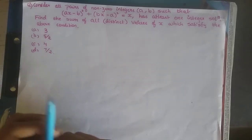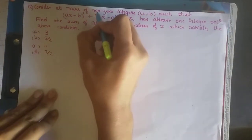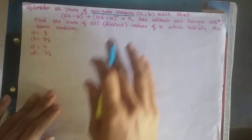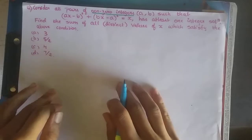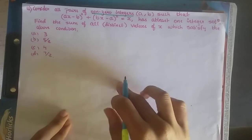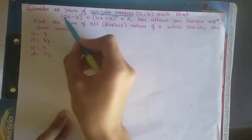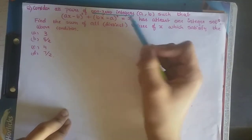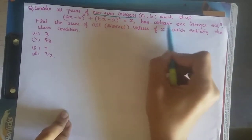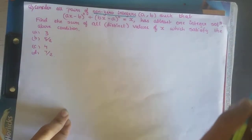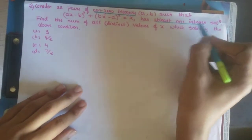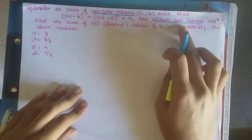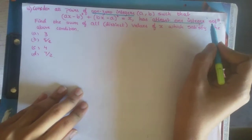Let's read the question first. It says: consider all pairs of non-zero integers. That's one hint for us — non-zero integers — and that is going to help us in many places for the solution. Non-zero integers a, b such that (ax − b)² + (bx − a)² = x. This equation has at least one integer solution. That point is also important for us, so I am underlining it.